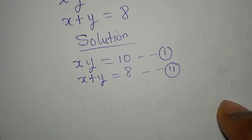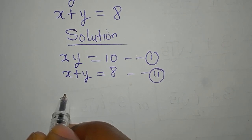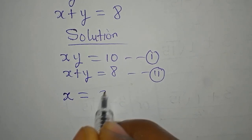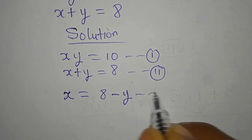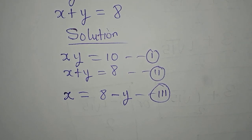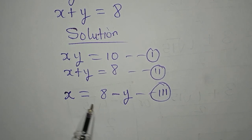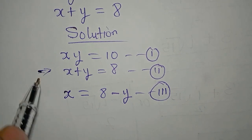Now, how do I deal with this? From this second equation, what if I say x is equal to 8 minus y? And then I'll call this equation 3. I have not changed anything, and this is still very acceptable. What equation gave birth to equation 3? It is equation 2.